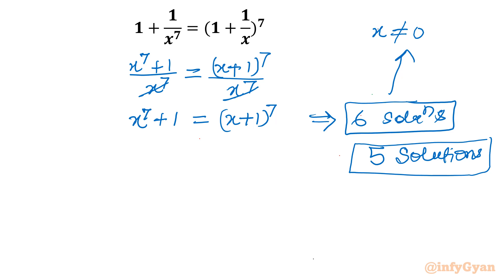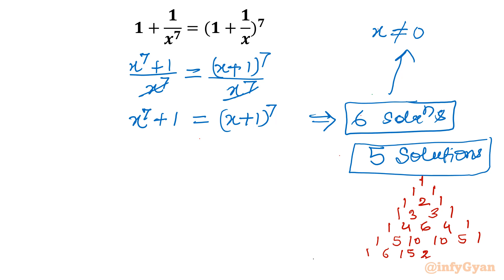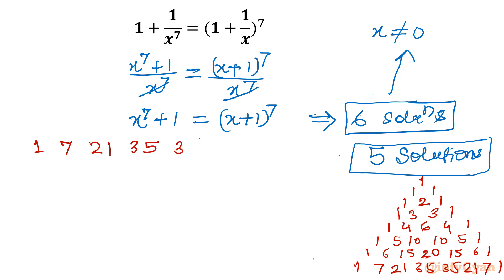I will use Pascal's triangle because expansion to power 7 is required. Building up: row for power 5 is 1, 5, 10, 10, 5, 1; row for power 6 is 1, 6, 15, 20, 15, 6, 1; and our row for power 7 is 1, 7, 21, 35, 35, 21, 7, 1. So our coefficients for the expansion of (x + 1)^7 are 1, 7, 21, 35, 35, 21, 7, 1.